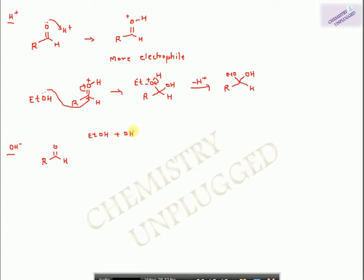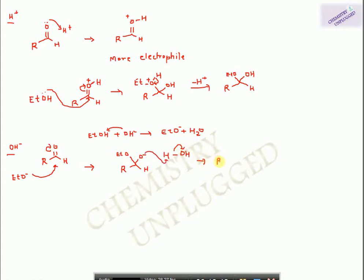If we use a base (OH⁻) as catalyst, in the first step EtOH reacts with OH⁻ and water is removed, generating EtO⁻. Previously we used EtOH as nucleophile, but in base-catalyzed reactions we use EtO⁻, which is more nucleophilic than EtOH. The nucleophilicity of the nucleophile is enhanced using basic catalyst. In the next step, this negative charge attacks the carbon and OH⁻ is regenerated, giving hemiacetal.